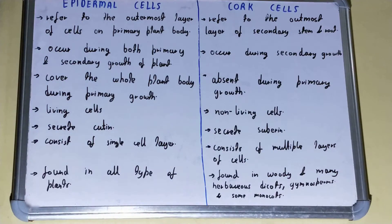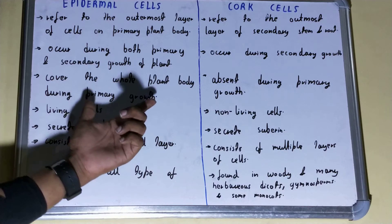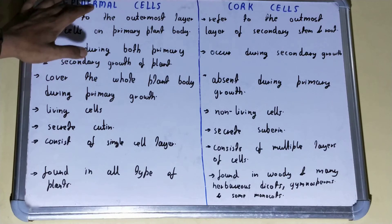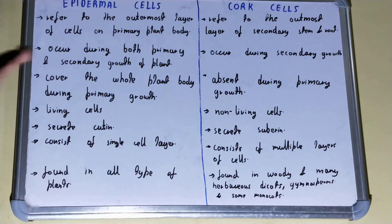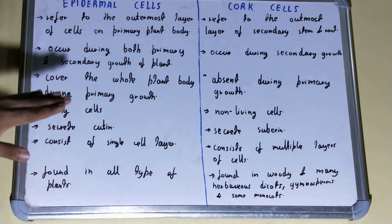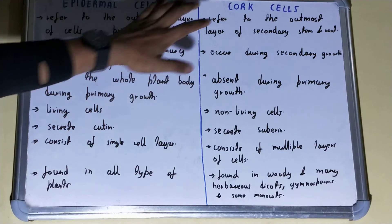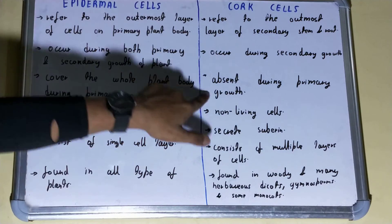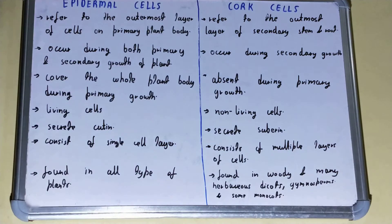During primary growth, epidermal cells cover the whole plant body. Cork cells, by contrast, are absent during the primary growth of the plant.